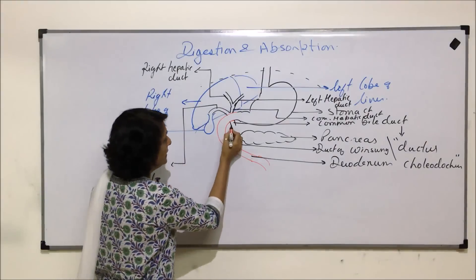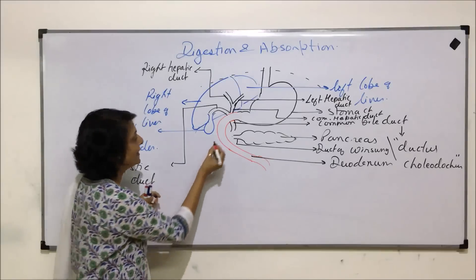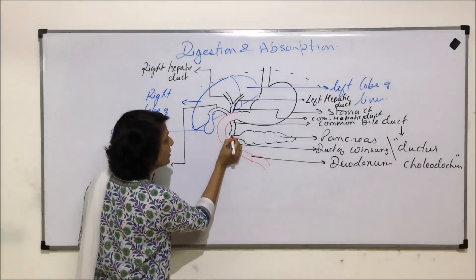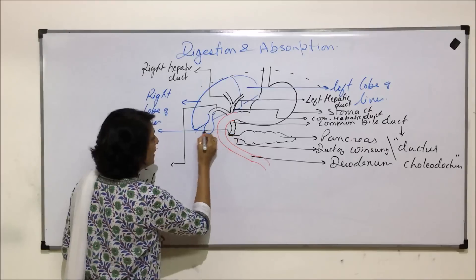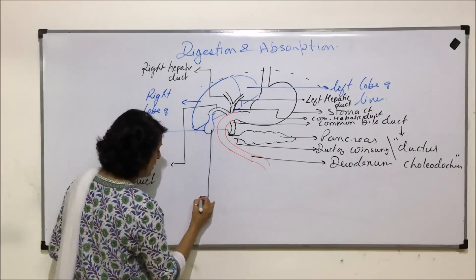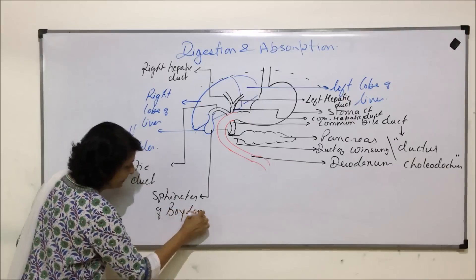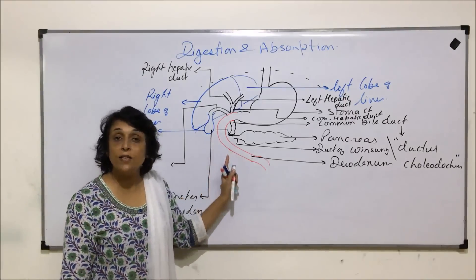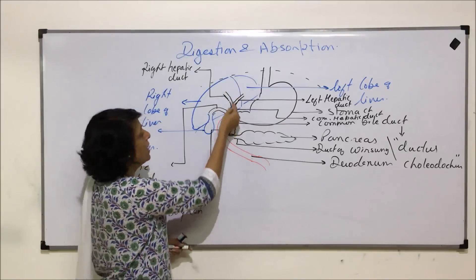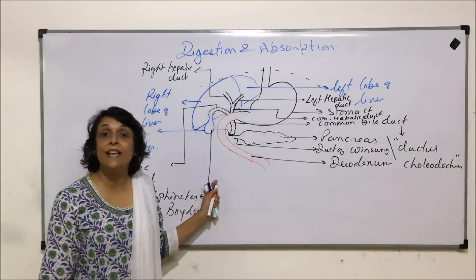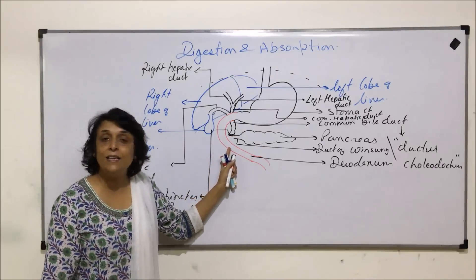The common bile duct comes toward the pancreatic duct, and before it joins the pancreatic duct there is a sphincter. This sphincter is known as the sphincter of Boyden. This sphincter remains closed when there is no food in the duodenum, so whatever bile is coming from the liver lobes is diverted into the gallbladder for storage. As soon as food comes into the duodenum, this sphincter opens and pours the bile into the duodenal part.